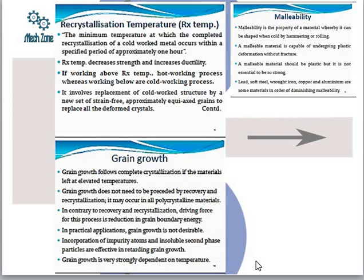Grain growth occurs when complete recrystallization of a material is left at elevated temperatures. Grain growth does not need to be preceded by recovery and recrystallization, and may occur in polycrystalline materials. The driving force for grain growth is reduction in grain boundary energy. In practical applications, grain growth is not desirable. The incorporation of impurity atoms or insoluble second-phase particles is effective in retarding grain growth. Grain growth is highly temperature-dependent.